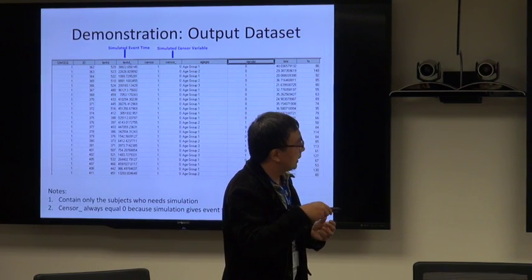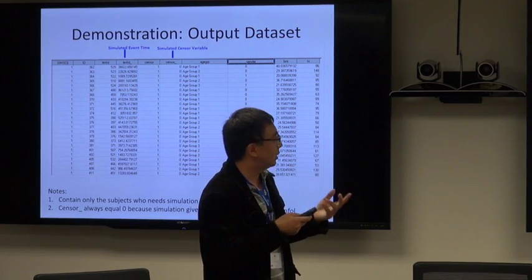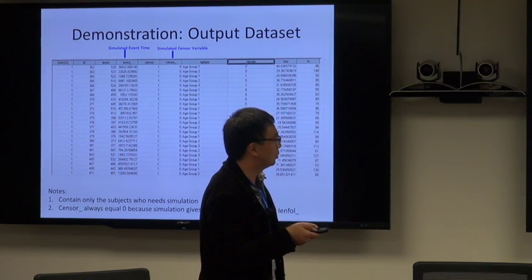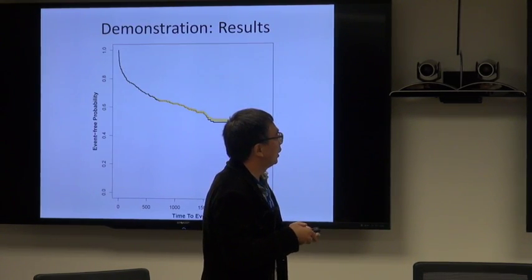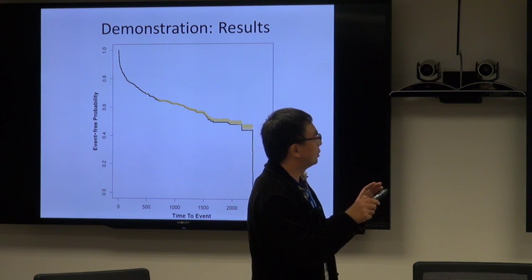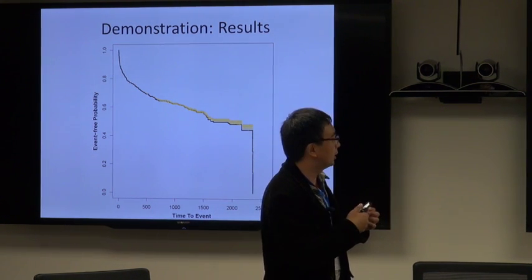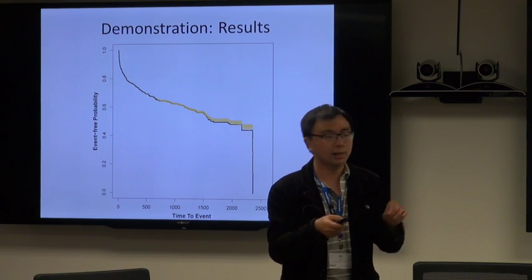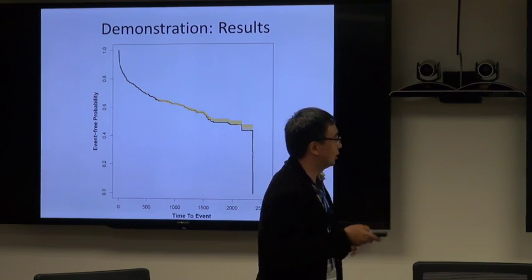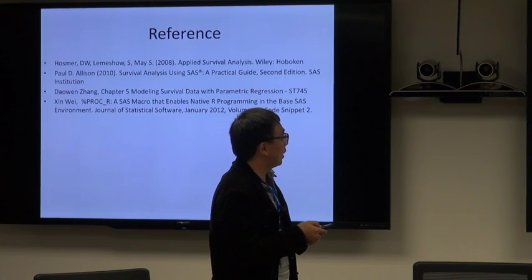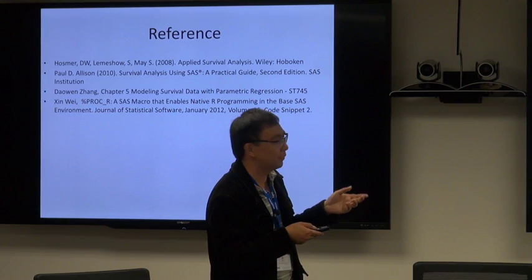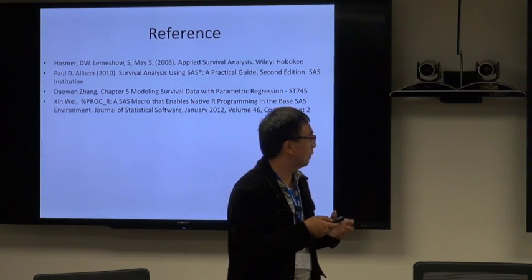That's the output dataset. Only two variables were added. One is the simulated event time, the second is the simulated censoring variable, which is simply straightforward. I put the Kaplan-Meier curve for the original data and the simulated data together in one plot. The blue line basically is the original data, the yellow line is the simulated data. I did the simulation 100 times, so they totally overlap together with each other.